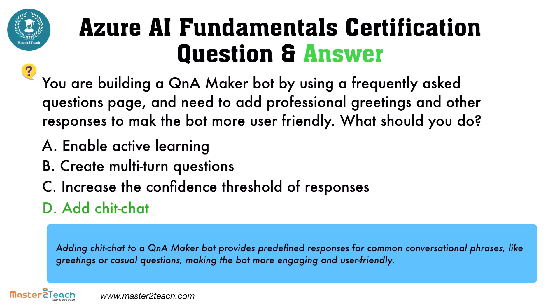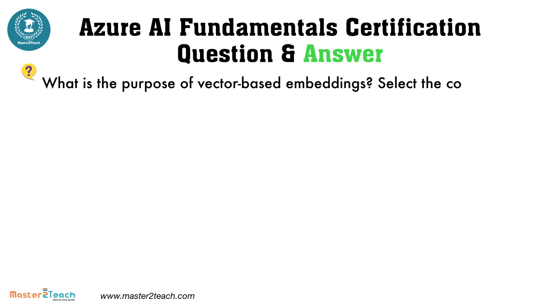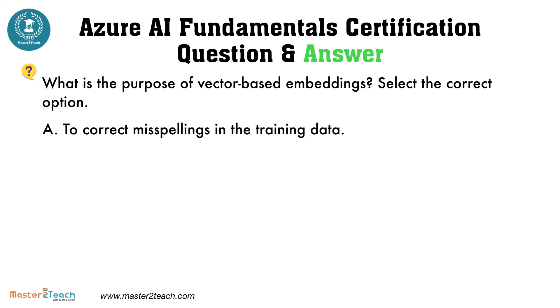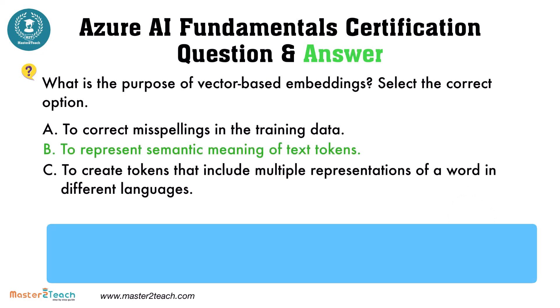making the bot more engaging and user-friendly. What is the purpose of vector-based embeddings? Select the correct option. The options are: A, to correct misspellings in the training data; B, to represent semantic meaning of text tokens; C, to create tokens that include multiple representations of a word in different languages. The correct option is to represent semantic meaning of text tokens.